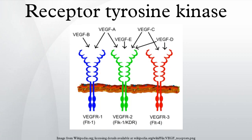Ephrin and Eph receptors are the largest subfamily of RTKs. The discoidin domain receptors, or DDRs, are unique RTKs in that they bind to collagens rather than soluble growth factors.